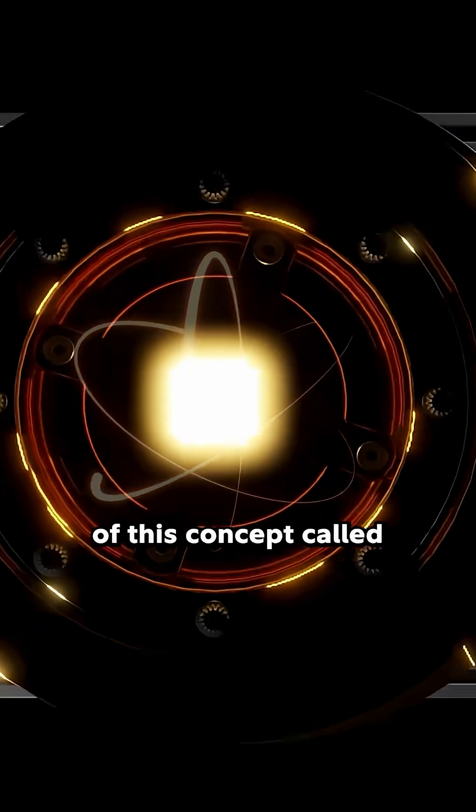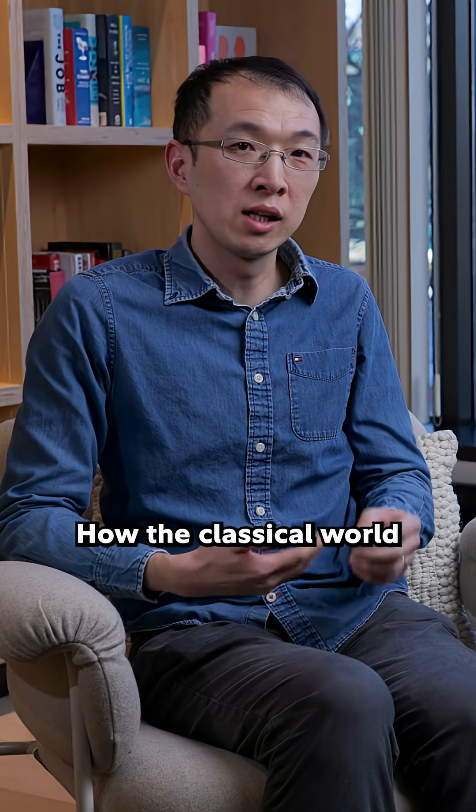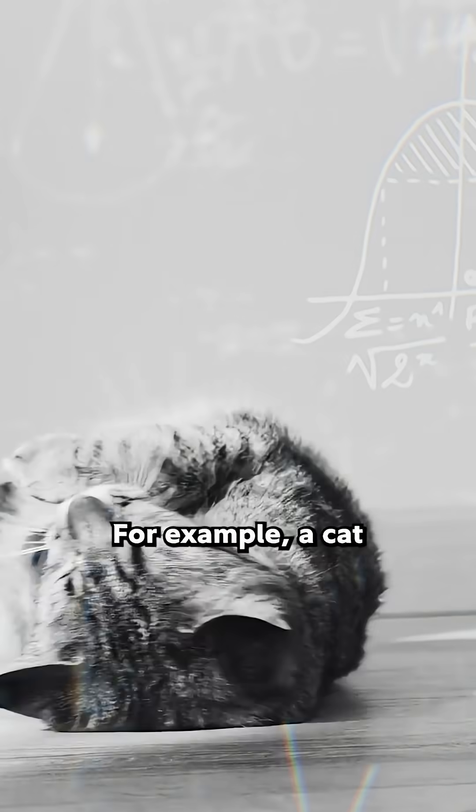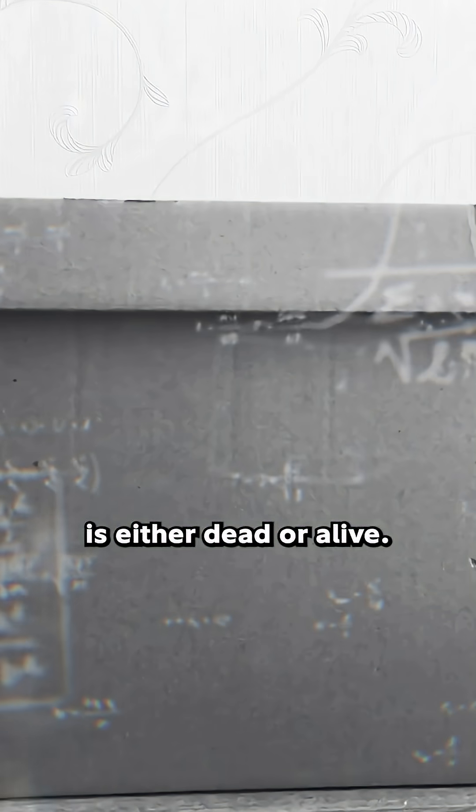You might have heard of this concept called Schrodinger's cat. How the classical world works is that things are in a definite state. For example, a cat is either dead or alive.